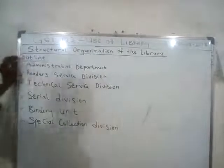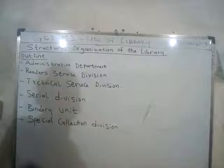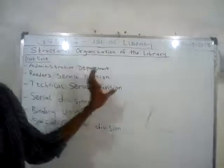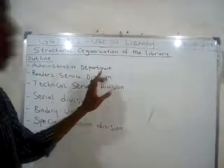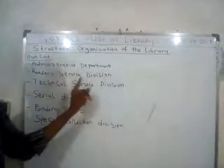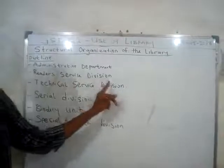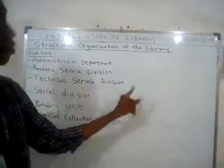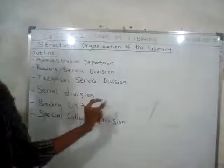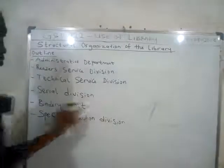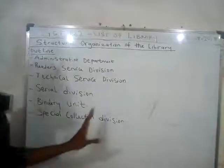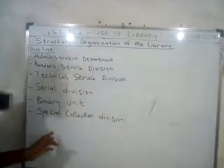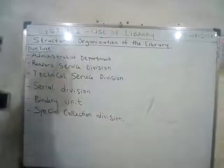Below is my outline. First, we are going to look at the administrative department of the library. Secondly, we look at the reader service division. Thirdly, we look at the technical service division. Fourthly, we look at the serial division. Fifth, we look at the boundary units. And lastly, we are going to look at the special collection division.